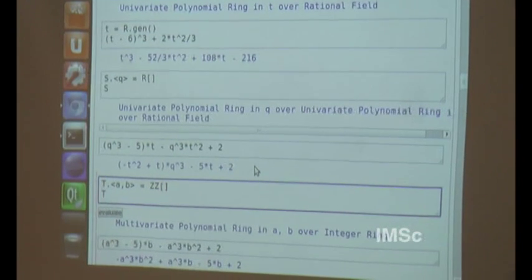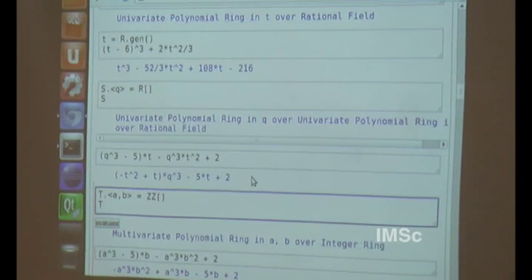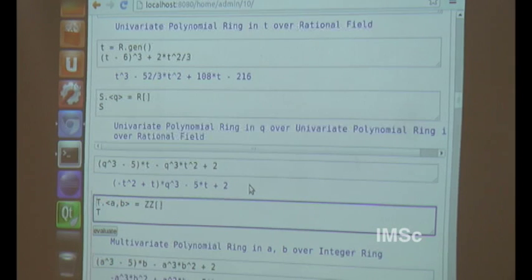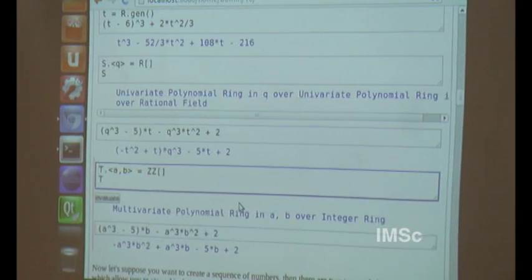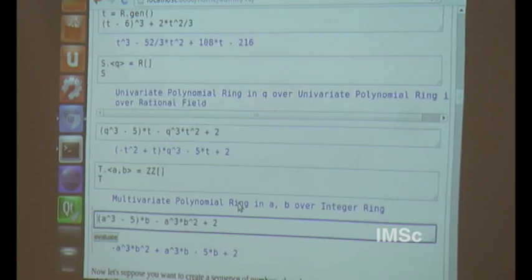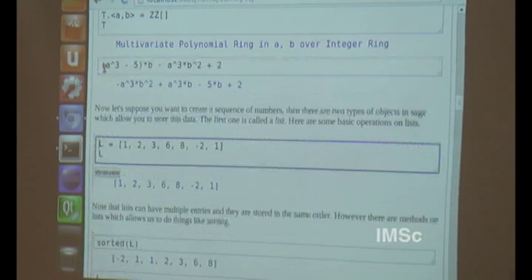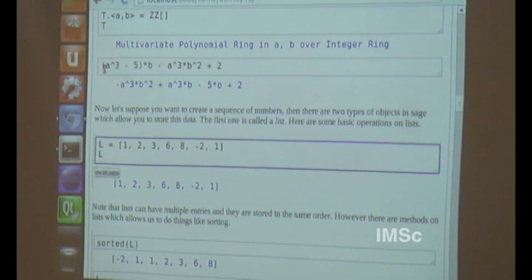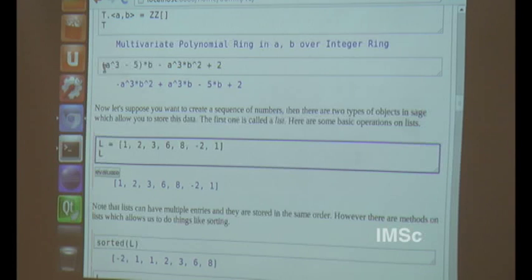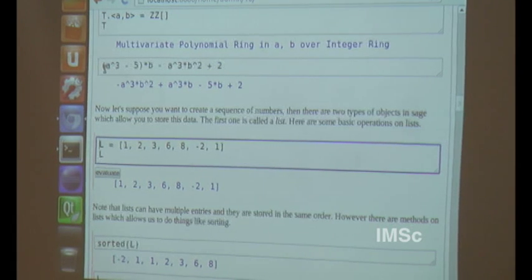This polynomial ring s is the same as the rationals adjoined q and t. But to SAGE, it collects terms by q and then subsequently by t, which in some situations can be helpful when you want to display what's going on. I can create multivariate in the same fashion with two generators. Instead of collecting terms by a and b, it orders them in a particular order, in this case degree by reverse lexicographic.